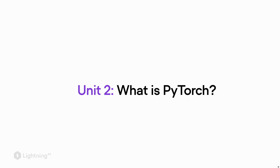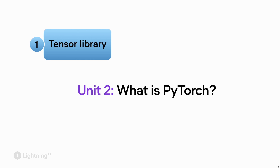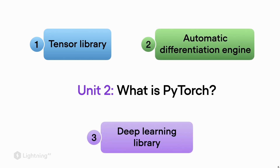If you remember from unit two, we discussed what PyTorch is. PyTorch is a tensor library, and it has an automatic differentiation engine. The third thing that PyTorch is — it's a deep learning library. So it implements a lot of convenience functions for deep learning, as we have just seen.